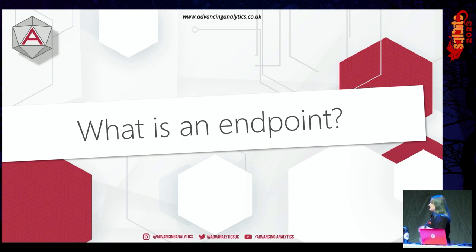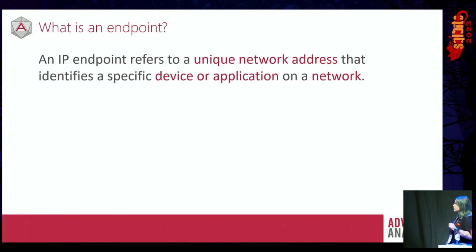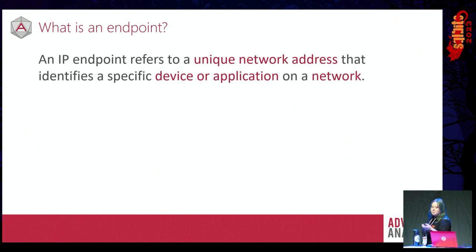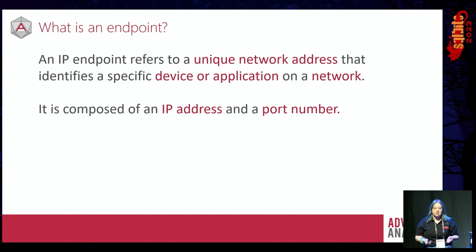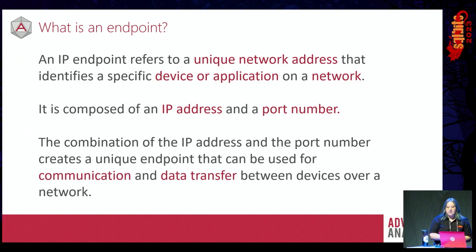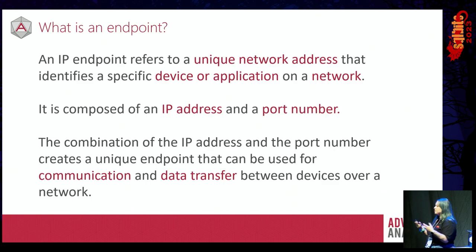So, what is an endpoint? I sat down to write a definition and was struggling, so I did what any self-respecting technology professional in 2023 would do and asked ChatGPT to write one for me. This is what it came up with: an IP endpoint refers to a unique network address that identifies a specific device or application on a network. It's composed of an IP address and a port number. Port numbers are a little bit outside of the scope of this talk, but we will be focusing a lot on IP addresses. The combination creates a unique endpoint used for data transfer between devices over a network.